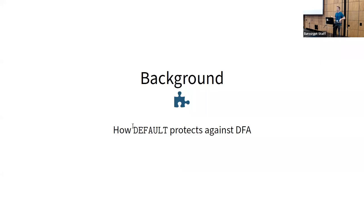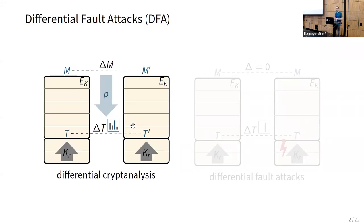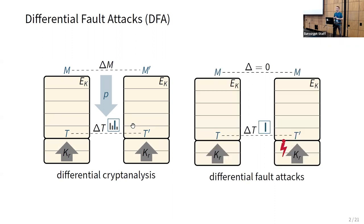Let's start with some background on differential fault attacks. Some of you may remember differential cryptanalysis, where two messages with a given difference lead to a certain internal difference delta t with some probability p. In differential fault attacks, we start with the same message twice, and in one computation we disturb it by physically affecting the operating conditions of the device — for example, by glitching the clock or disturbing the power supply — inducing a fault during computation. We can then use this difference to perform a key recovery attack similar to differential cryptanalysis.